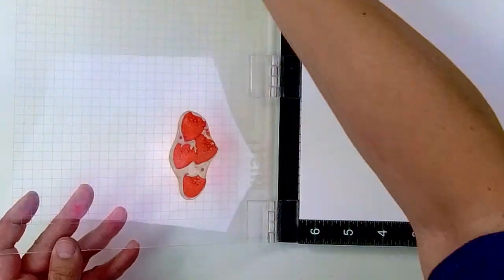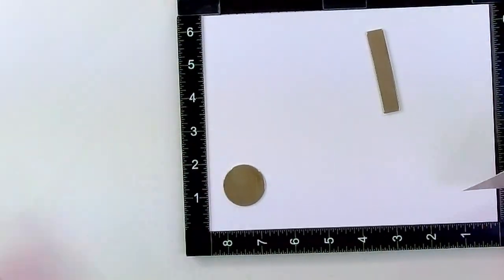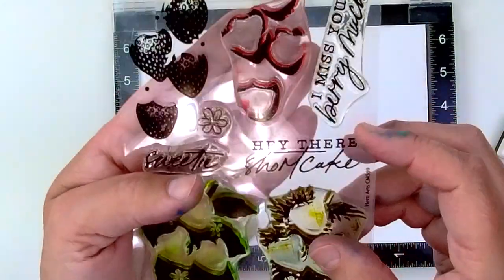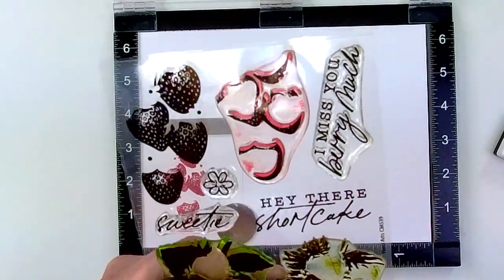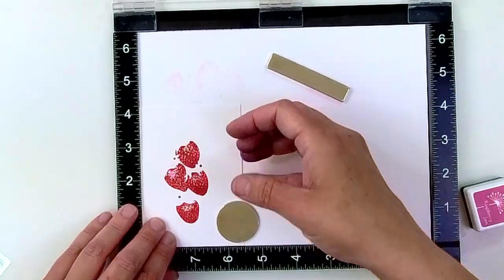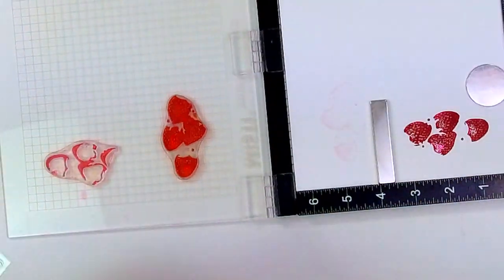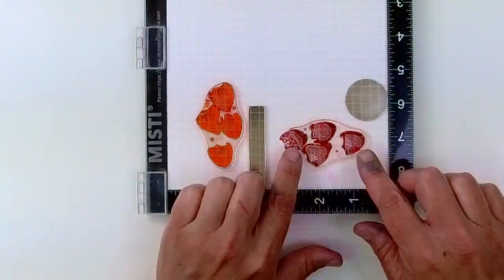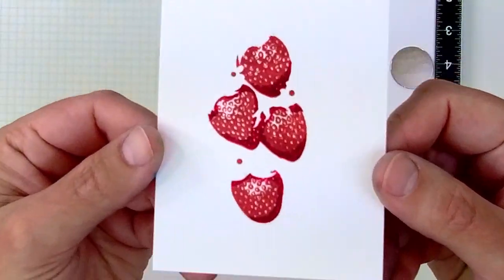Now I'm going to rotate my MISTI and place that same piece of cardstock in that left corner and knock it all the way into the corner so that I can stamp the detail layer of the strawberries. I'm aligning my stamp on top of those strawberries, and I'm going to use that darker color of red to stamp the detail.